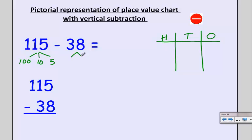And again, I want to decompose and look at 38, which is made up of 30 and 8. So I always take my bigger number and represent that in my chart because that's what I'm going to take away from. So I have 1 100, 1 10, and 5 1's. And I write them all in a nice row.